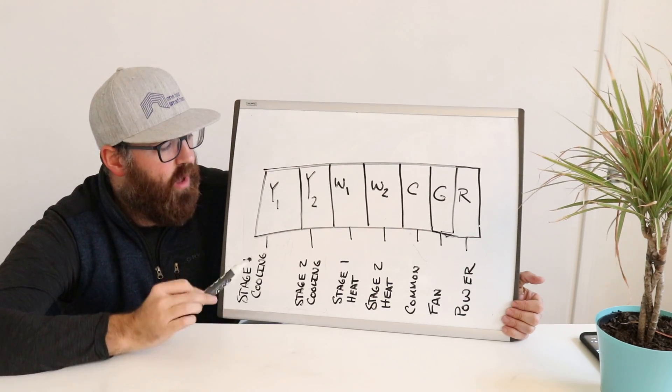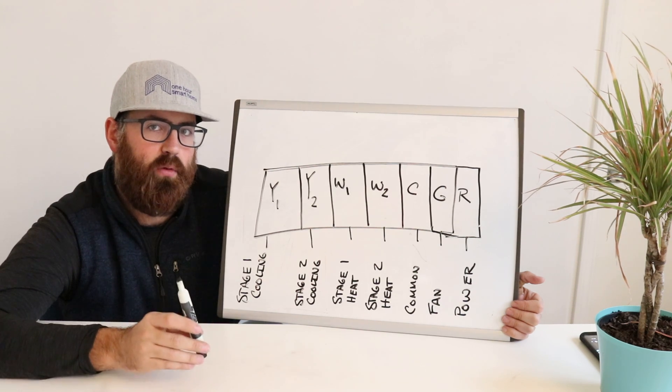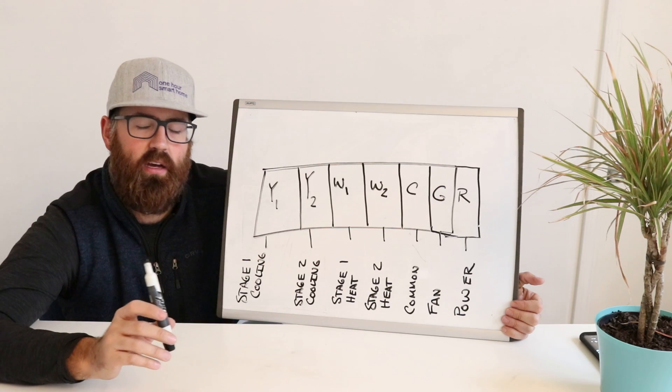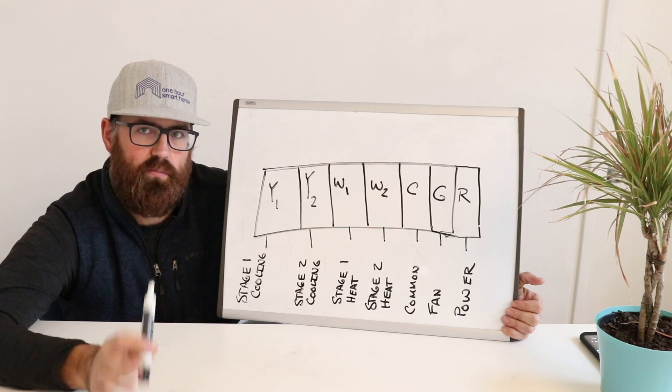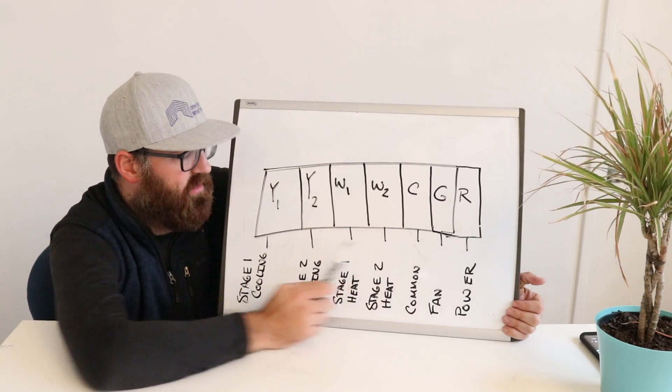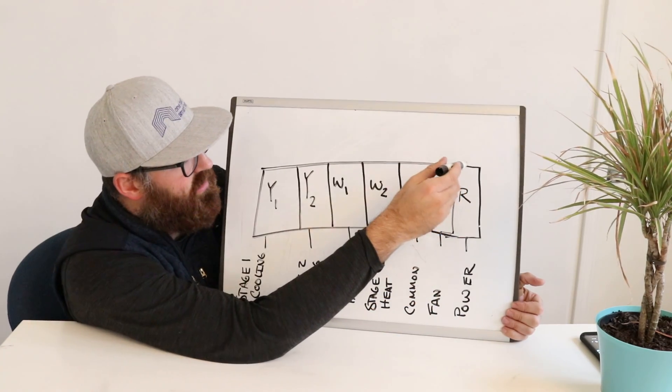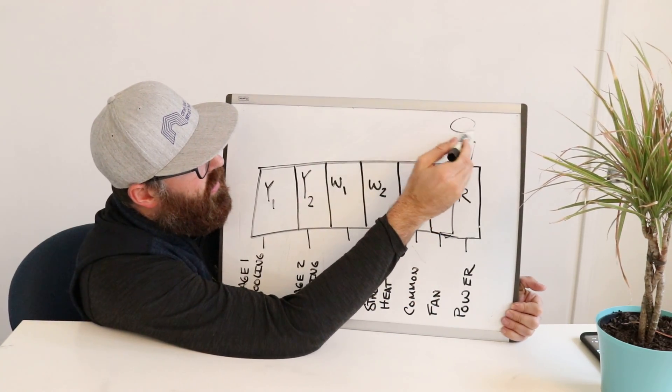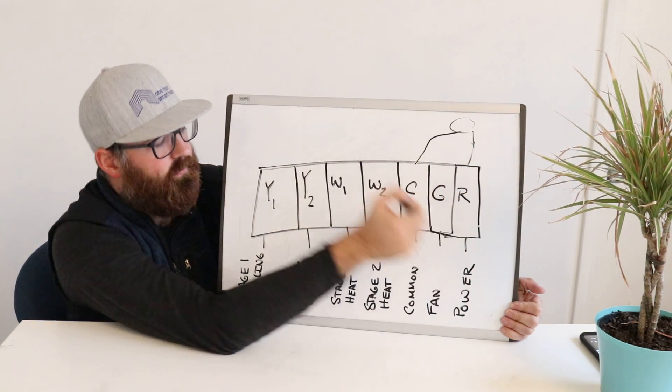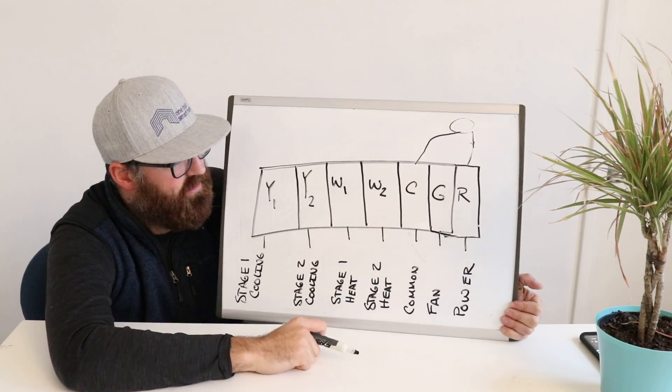Why do you need that? Well, because a C wire and an R wire allow the circuit to be completed so that your thermostat can connect to Wi-Fi. It can display its nice beautiful display that uses a lot of power without triggering any one of these other stages of heating or cooling to complete the circuit. So what this allows is a continuous circuit to your thermostat from the R wire to the C wire and allows it to be powered without triggering any of these other things.